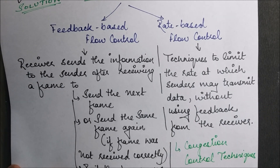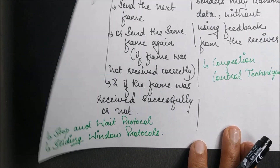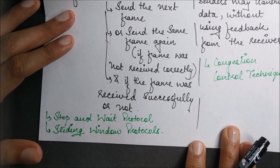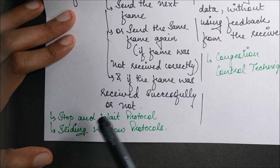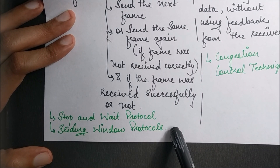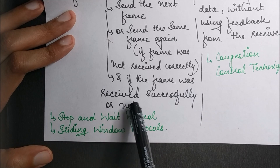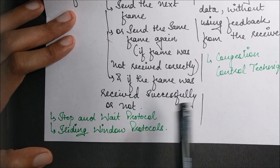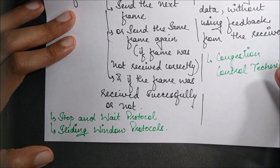The techniques that come under rate-based flow control are congestion control techniques, which we will discuss later. Feedback-based flow control has two major protocols: stop-and-wait protocol and sliding window protocol. In the next session I'm going to start with stop-and-wait protocol, and then we'll cover sliding window protocol along with numericals on both of them.